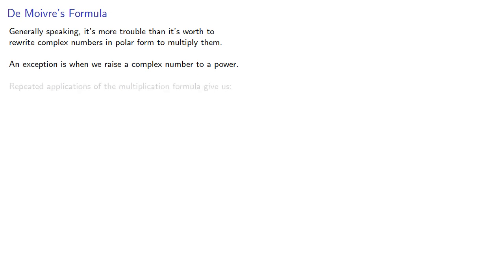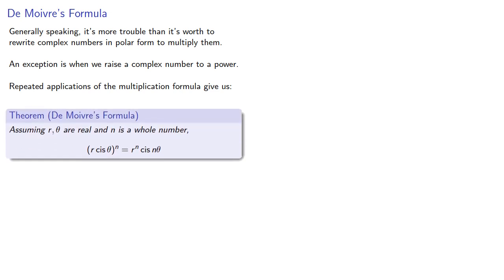Repeated applications of the multiplication formula give us the following. Assuming r, θ are real, and n is a whole number, (r cis θ)^n = r^n cis(nθ).